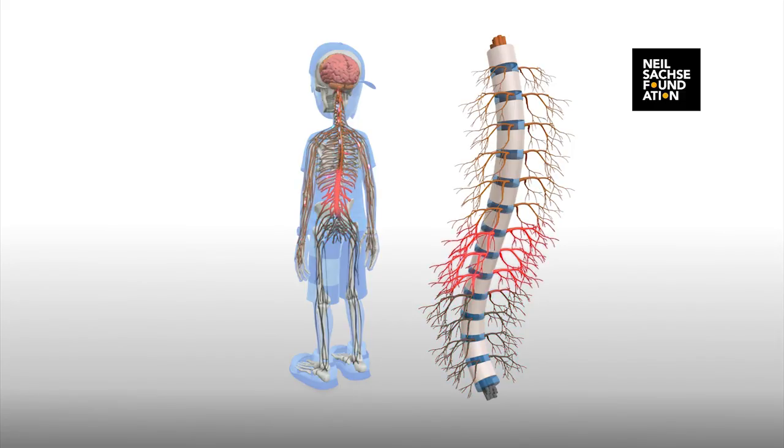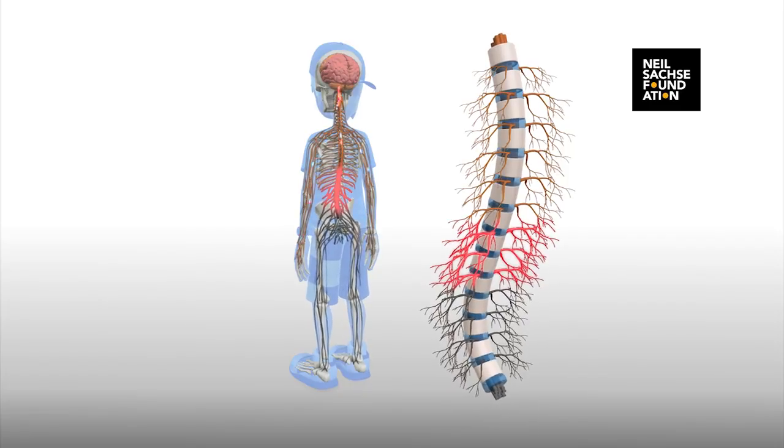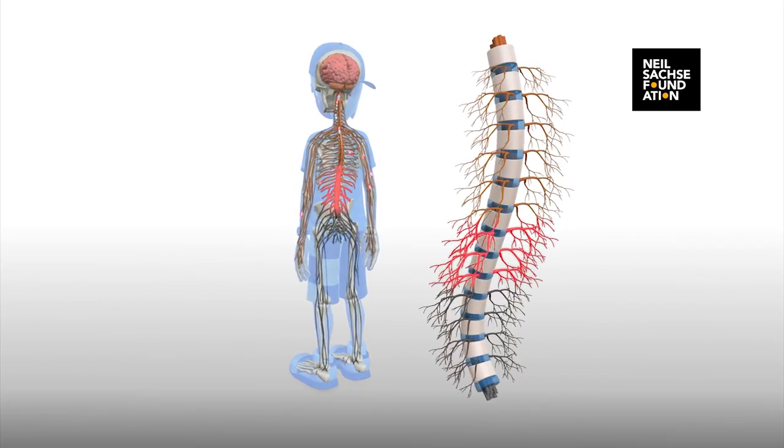These nerves control your hip motion, your trunk stability, and your temperature regulation. The higher an injury occurs in the spinal cord, the greater the loss of function.